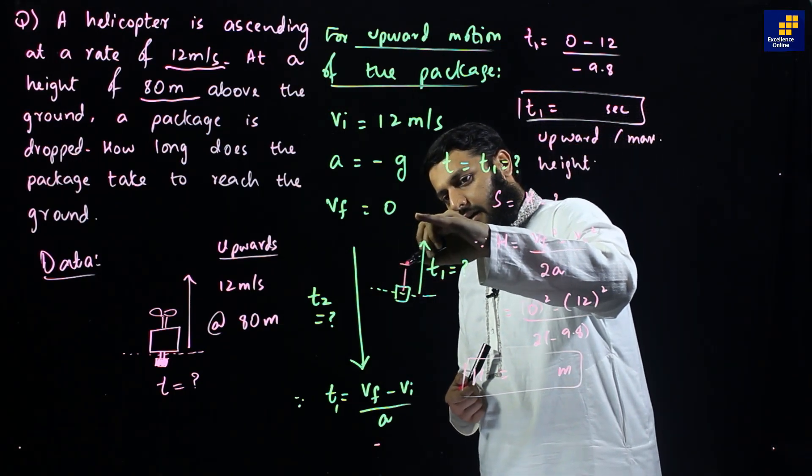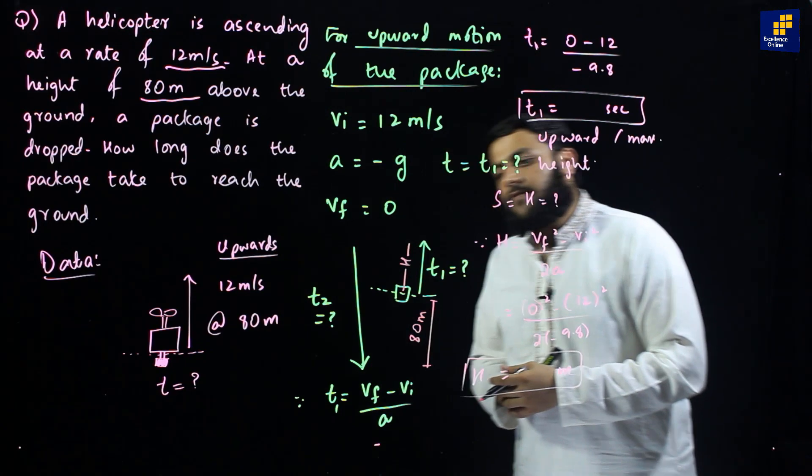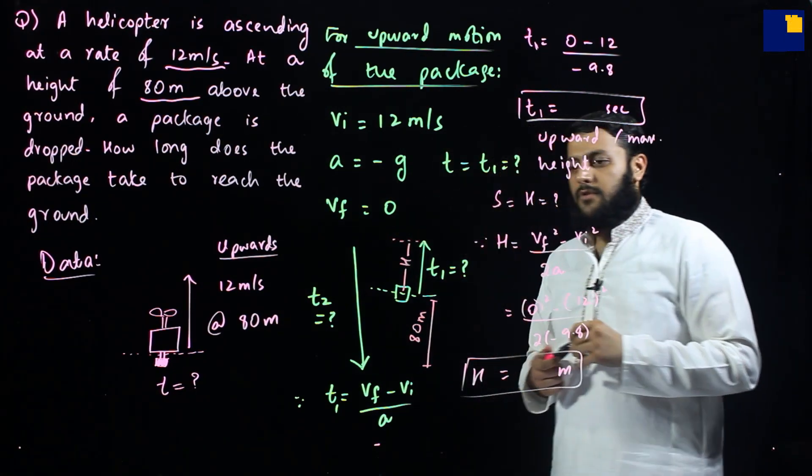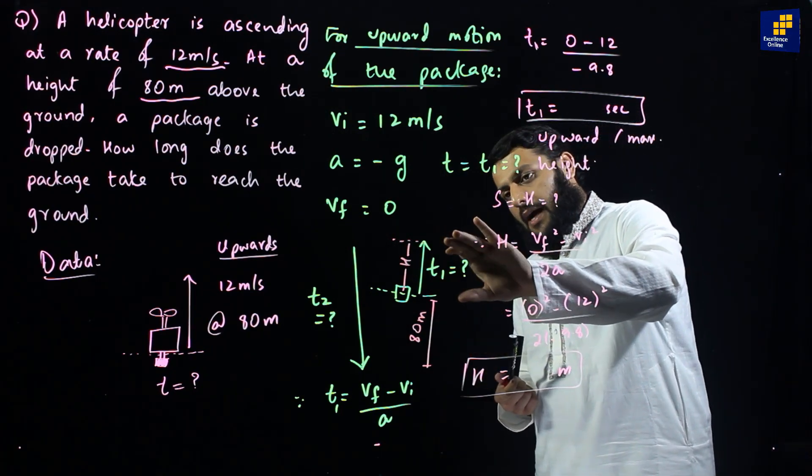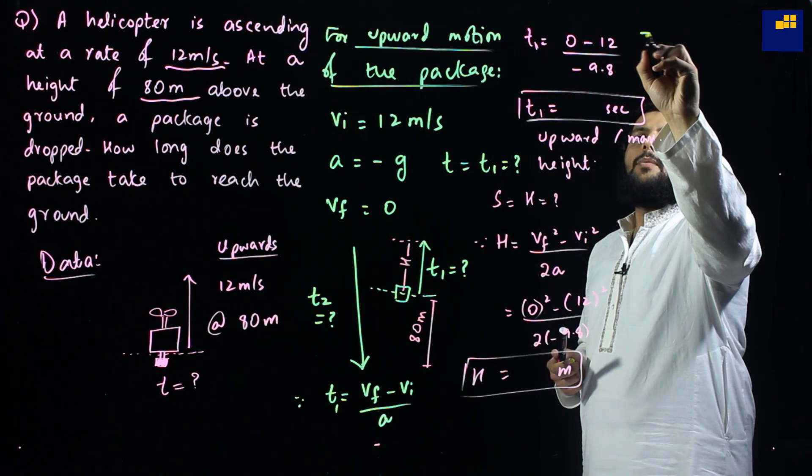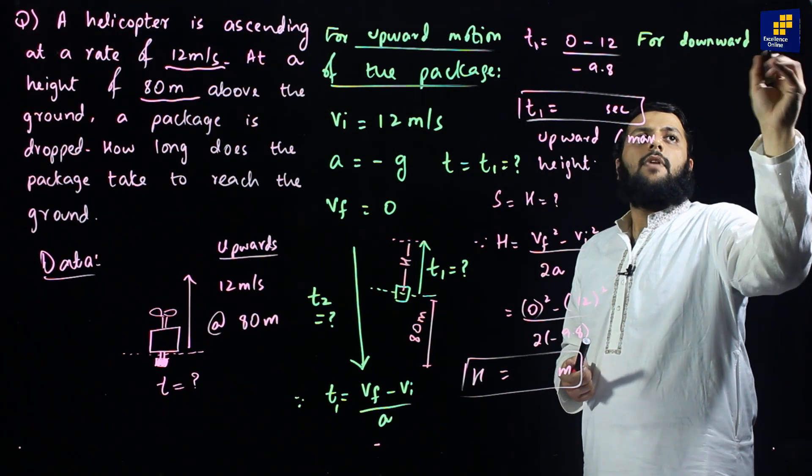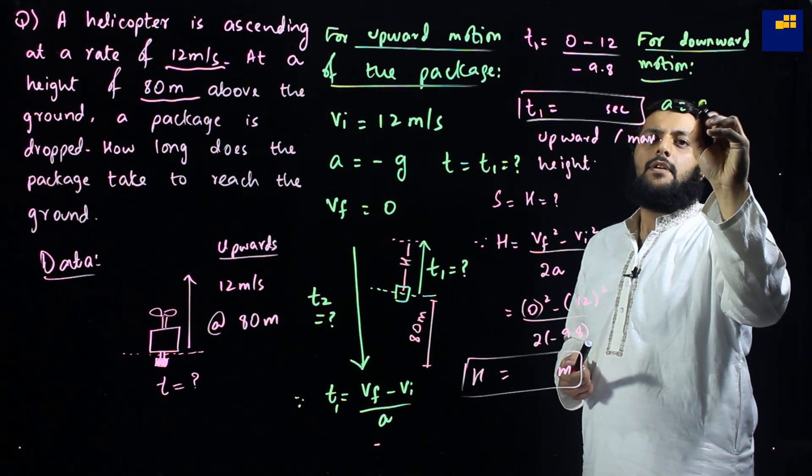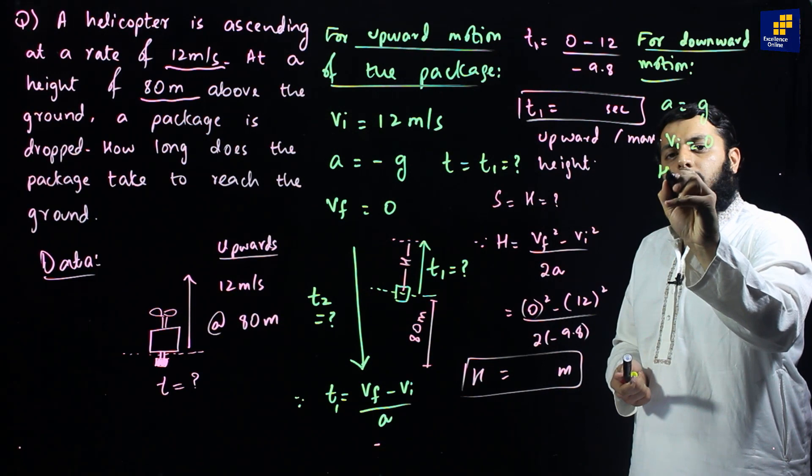Now, you know how much the package has been risen. This is given by height h. This distance is already 80 meters since the package that has been released from the helicopter is released at 80 meters. It goes up. Then it goes down. So we now know h, we now know 80 meters, and my package is now about to fall.